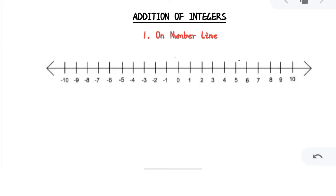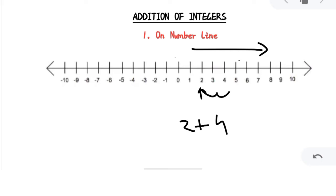For positive integers, for addition we have to move always towards the right. For example, if you have to add 2 plus 4, first we will go to 2 and then move 4 steps towards the right, which will bring us to the answer 6. Similarly, for negative integers we have to move towards the left whenever we get a negative integer to add.